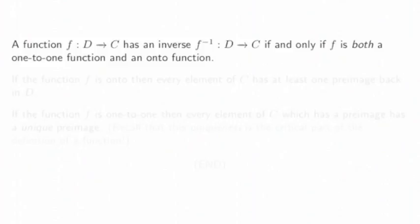A function f from D to C has an inverse function from C to D if and only if f is both a one-to-one function and an onto function.